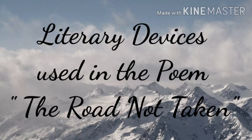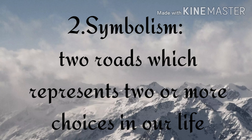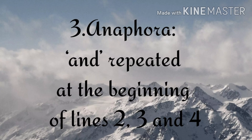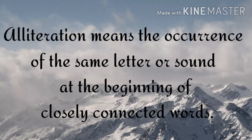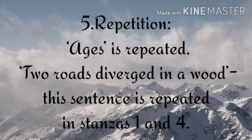Now we will focus on the literary devices used in the poem The Road Not Taken. The rhyme scheme of this poem is ABAAB. Symbolism: two roads represent two or more choices in our life. Next, anaphora, which means the repetition of the same word at the beginning of the lines — here, 'and' is repeated at the beginning of lines 2, 3, and 4. Next, alliteration means the occurrence of the same letter or sound at the beginning of closely connected words — here, W is repeated in 'wanted wear', F is repeated in 'first for', and TH is repeated in 'though that'. Next, repetition: 'ages' is repeated, and 'two roads diverged in a wood' is repeated in stanzas 1 and 4.